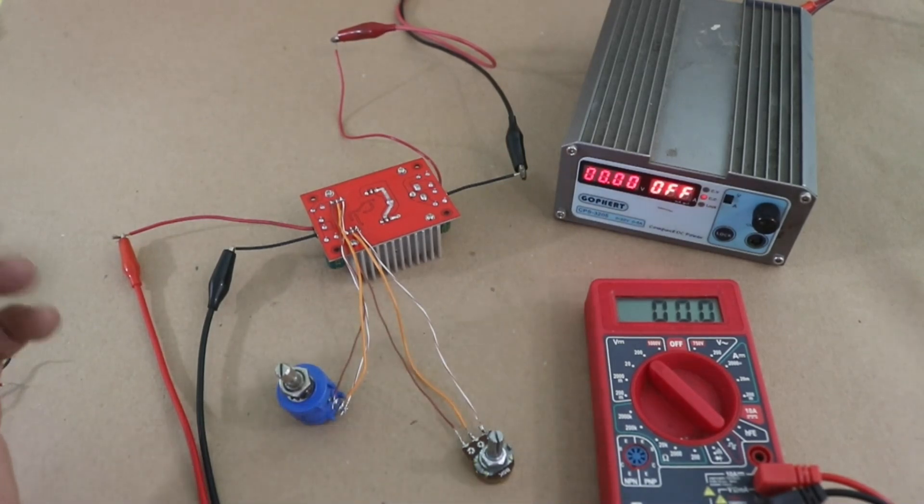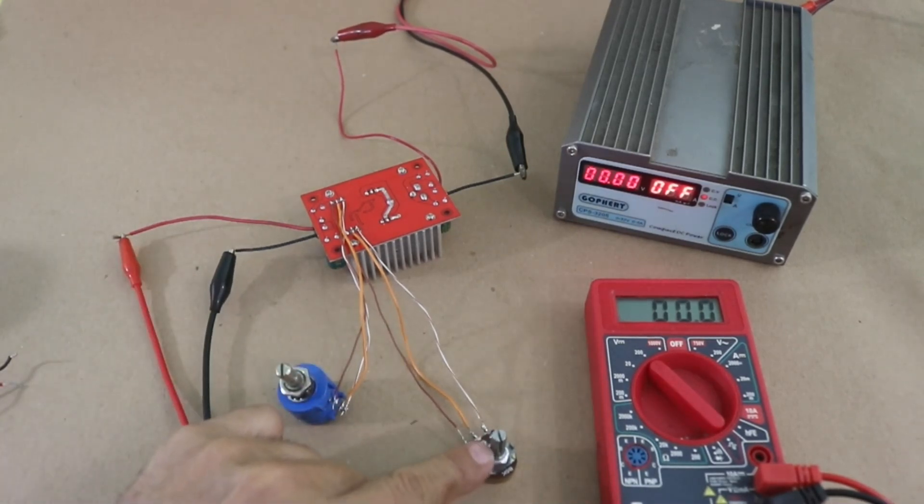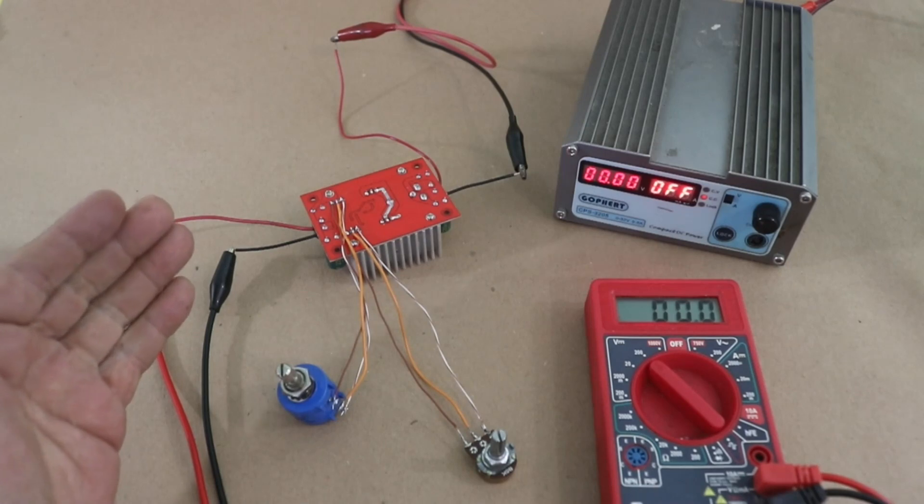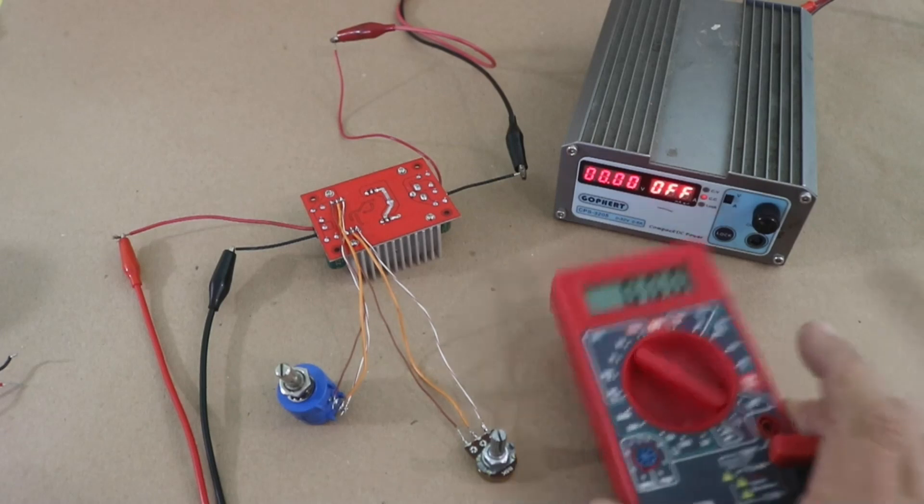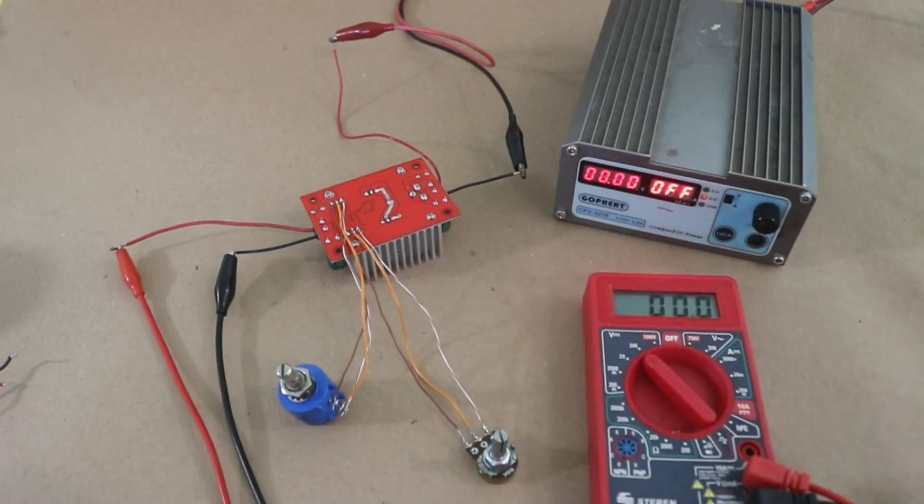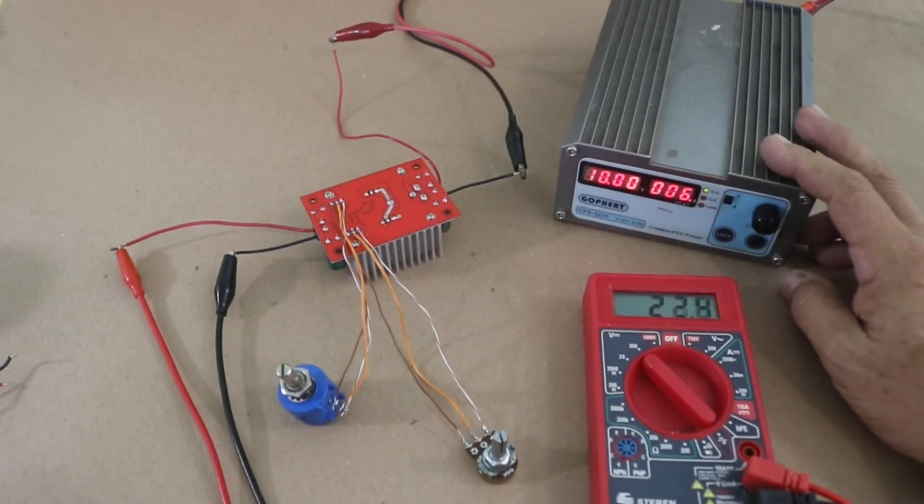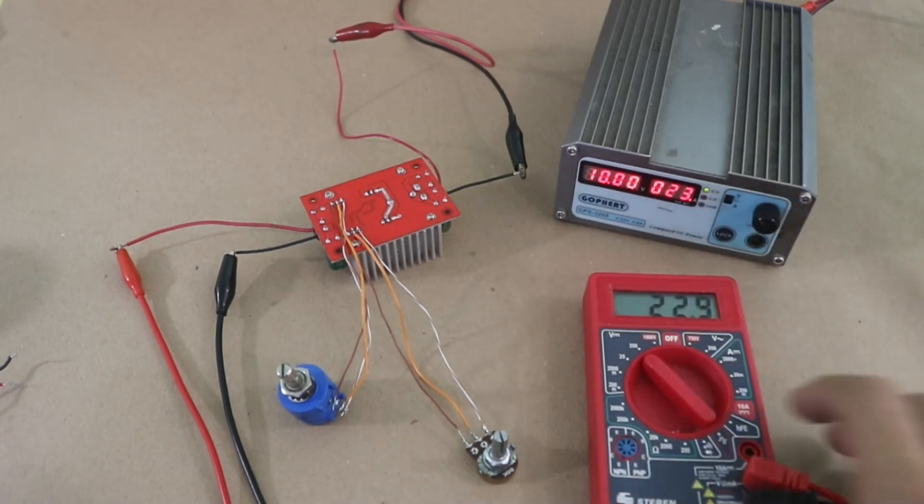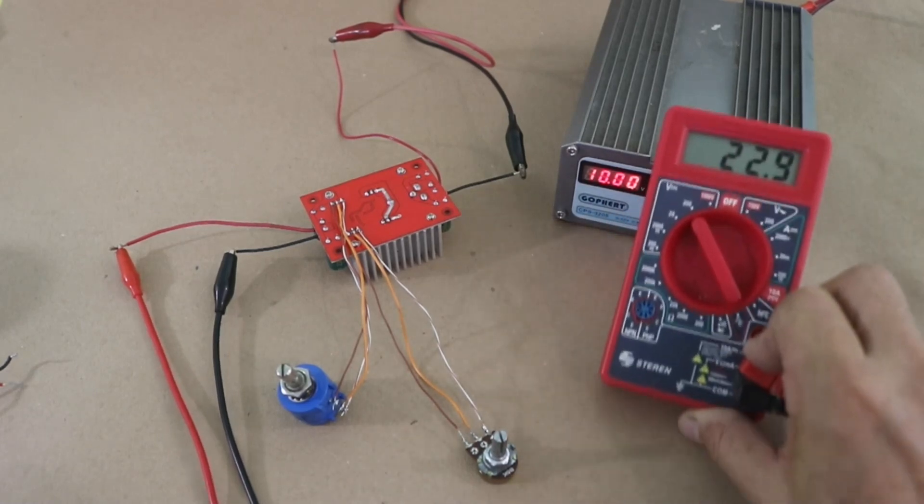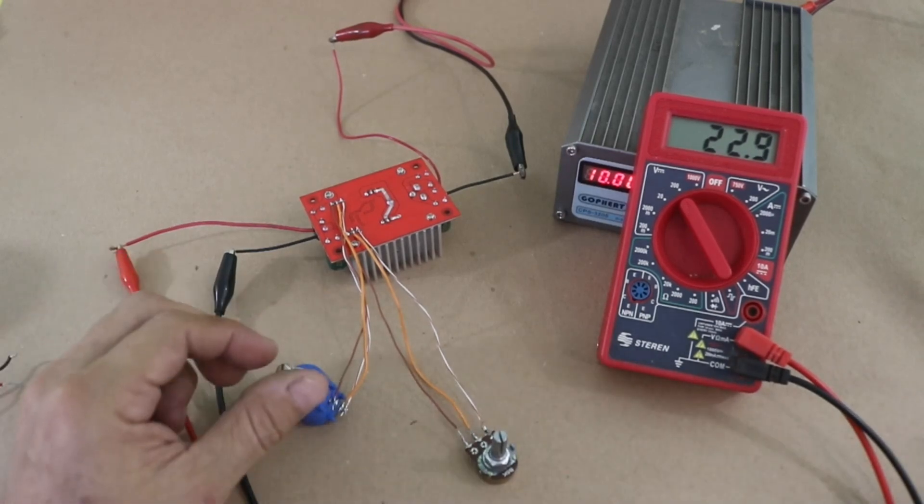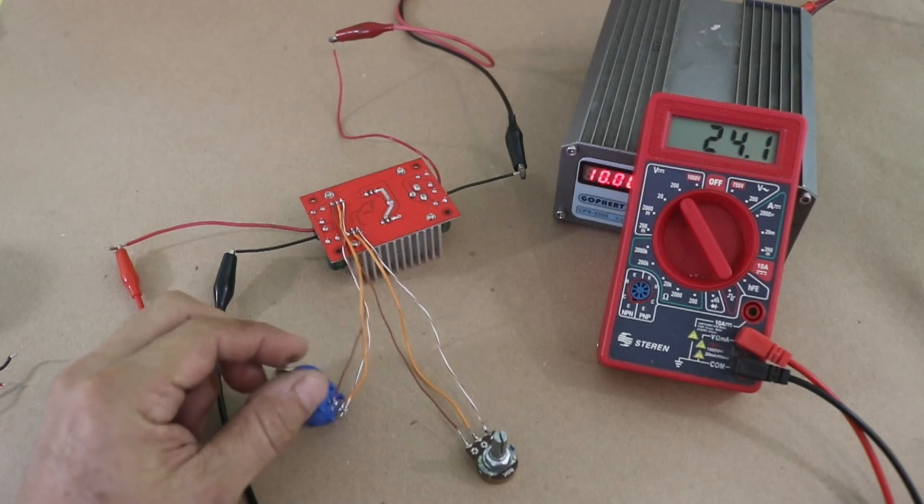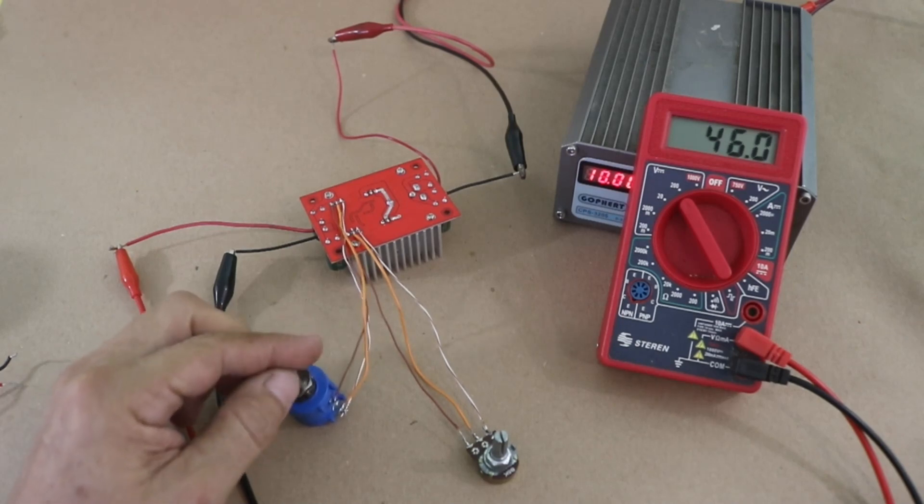Okay, so I changed the two trimpots with the potentiometers and made the connections. I'm going to test the module with the power supply, and I have a multimeter to check the output. So, let me turn on the power supply, 10 volts at the input, and we have some 23 volts at the output. And, let's check the potentiometer, and there it is. Now, we can easily adjust the voltage, up and down.